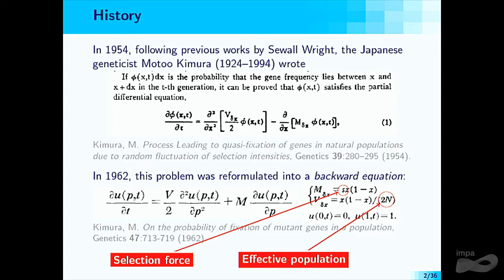If N goes to infinity — a very large population — the random term will disappear and we have only a deterministic equation, basically a PDE reformulation of an ODE. The unknown U in the adjoint equation is the probability of fixation of a mutant gene in a population starting with P individuals of that type. In the backward evolution, we know that one type will dominate the population in the long run. U is the probability that in the long run the entire population will be of the focal type.